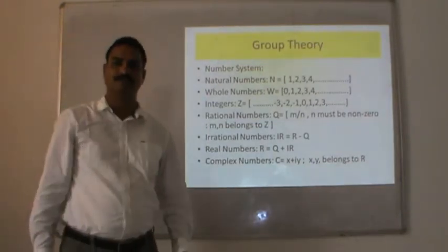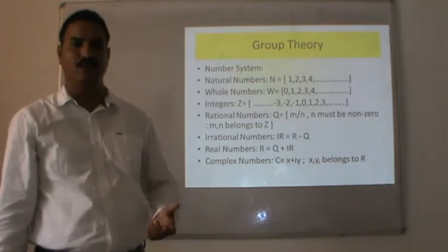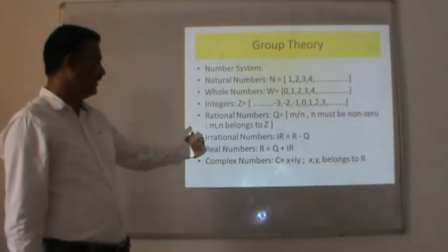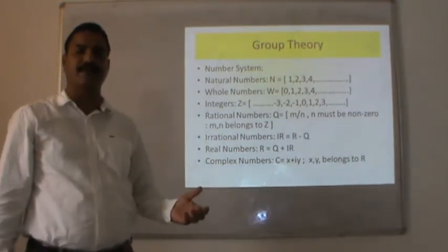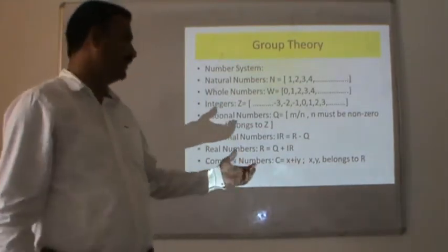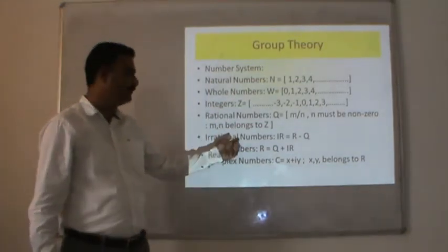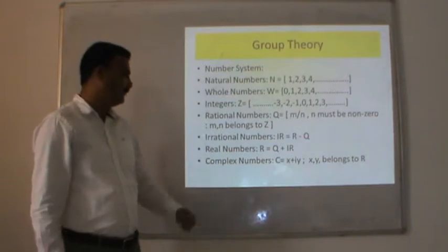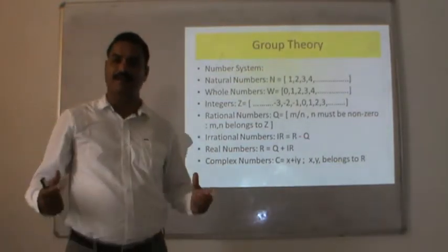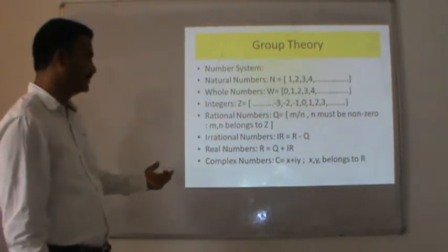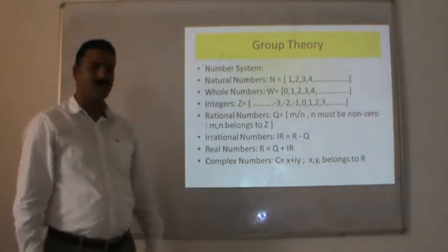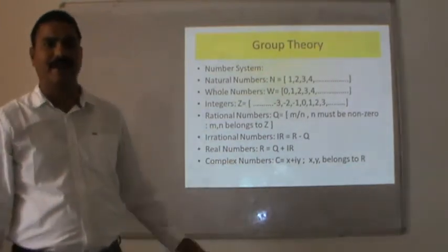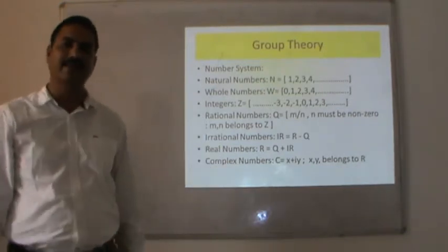The next is rational numbers, denoted Q — any number which can be expressed in fraction form m/n, where n must be a non-zero value. Then irrational numbers: if you subtract rational numbers from the set of real numbers, you get irrational numbers — numbers which cannot be expressed in fraction form. For real numbers, if we merge all rational and irrational numbers it forms the set of real numbers. Finally, complex numbers, denoted C, consist of elements like x + iy, where i is an imaginary unit and x, y are real numbers.